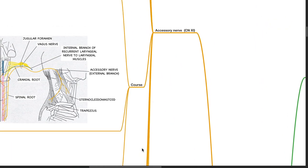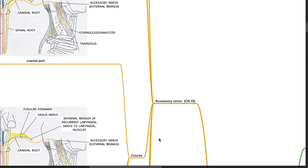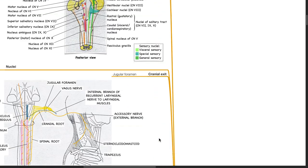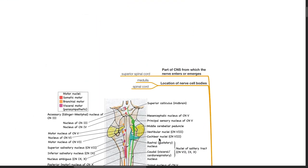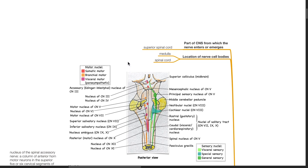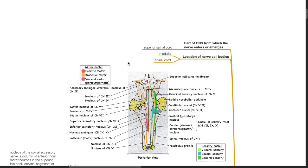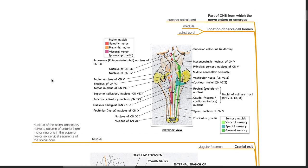Next we move on to the accessory nerve, cranial nerve 11. Cranial nerve 11 emerges from the superior spinal cord. Nerve cell bodies are located in the medulla and the spinal cord. The nucleus of the spinal accessory nerve is a column of anterior horn motor neurons in the superior 5 or 6 cervical segments of the spinal cord.